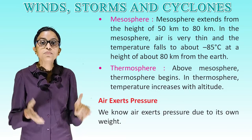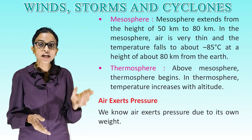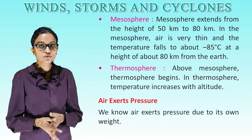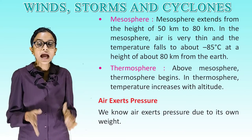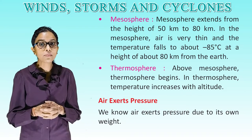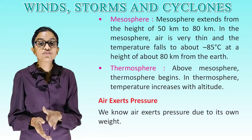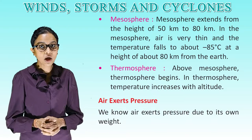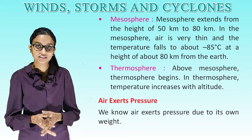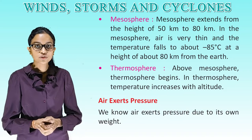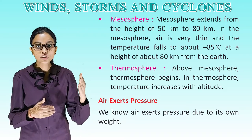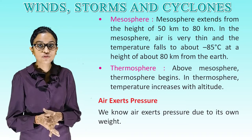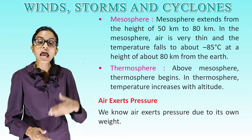Mesosphere: The mesosphere extends from a height of 50 km to 80 km. In the mesosphere, air is very thin and the temperature falls to about minus 85 degrees Celsius at a height of about 80 km from the earth. Thermosphere: Above the mesosphere, the thermosphere begins. In the thermosphere, temperature increases with altitude.